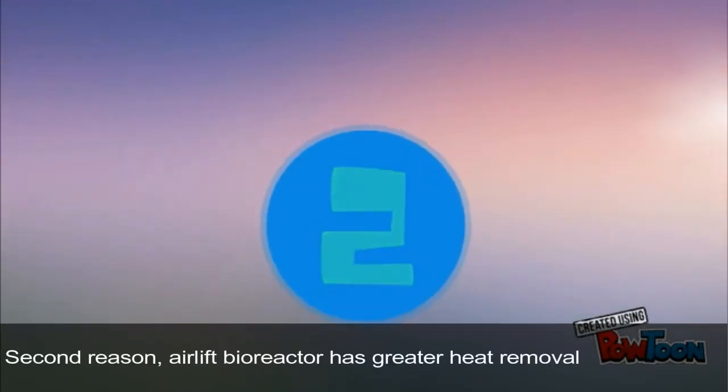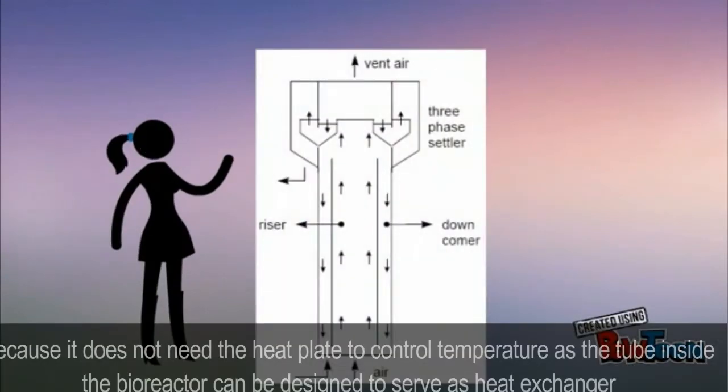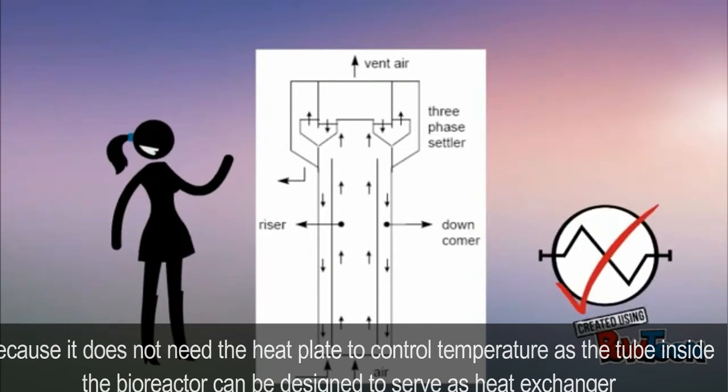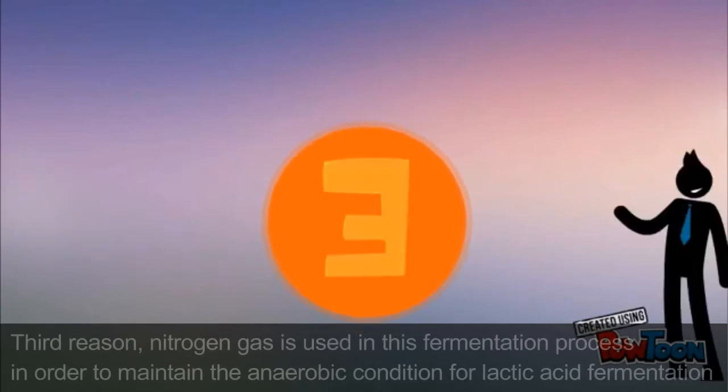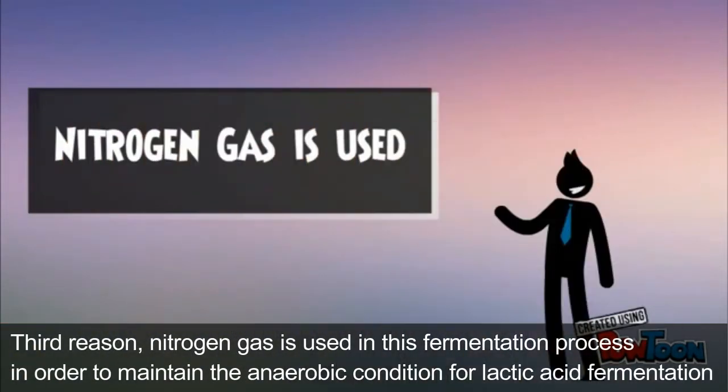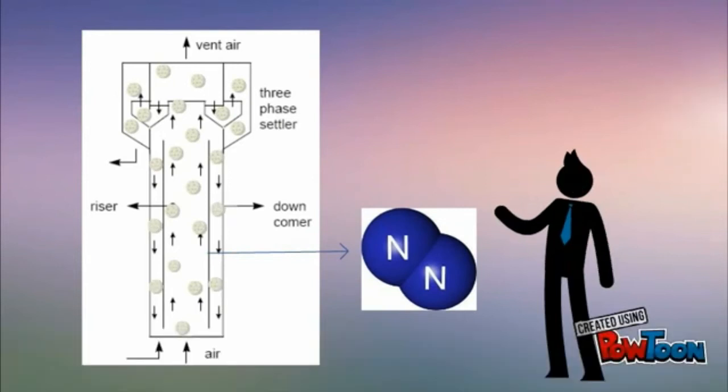Second reason, airlift bioreactor has a greater rate of heat removal because it does not need the heat plate to control the temperature, as the tube inside the bioreactor can be designed to serve as heat exchanger. Third reason, nitrogen gas is used in this fermentation process in order to maintain the anaerobic condition for lactic acid fermentation.